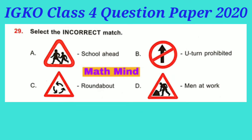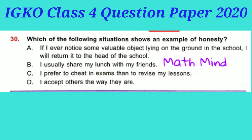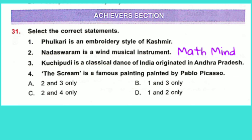Question No. 29: Select the incorrect match. Option B is correct — this is not the correct road sign for U-turn prohibited. This is the correct sign of U-turn prohibited. Question No. 30: Which of the following situation shows an example of honesty? 'If I ever notice some valuable objects lying on the ground in the school, I will return it to the head of the school.' This is an example of honesty.